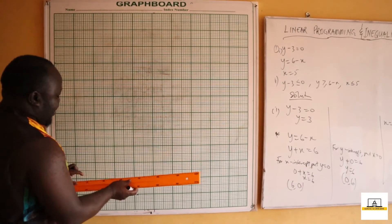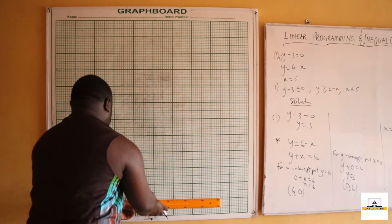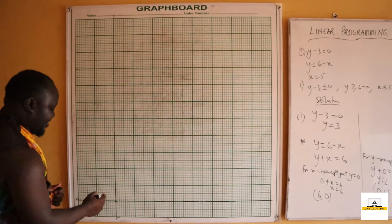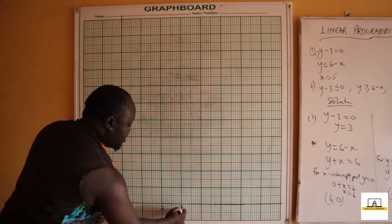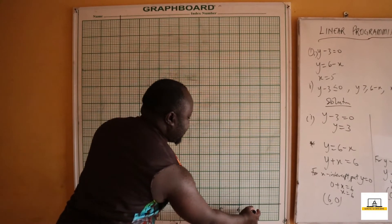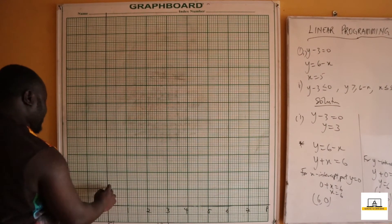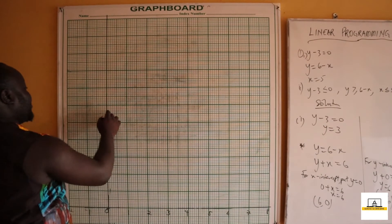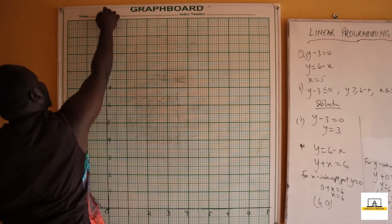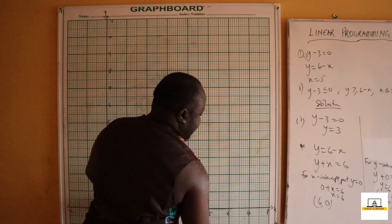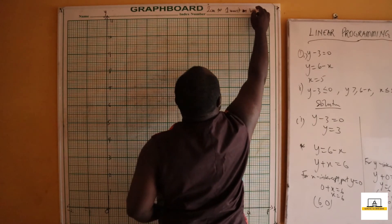We make this point our origin and draw our x and y-axes with 2 centimeters to 1 unit on both axes. Along the x-axis we mark 0, 1, 2, 3, 4, 5, 6, 7, 8, and also negative 1, negative 2. Along the y-axis we mark 1 through 11. So we have our y-axis and x-axis set up with 2 centimeters to 1 unit on both axes.